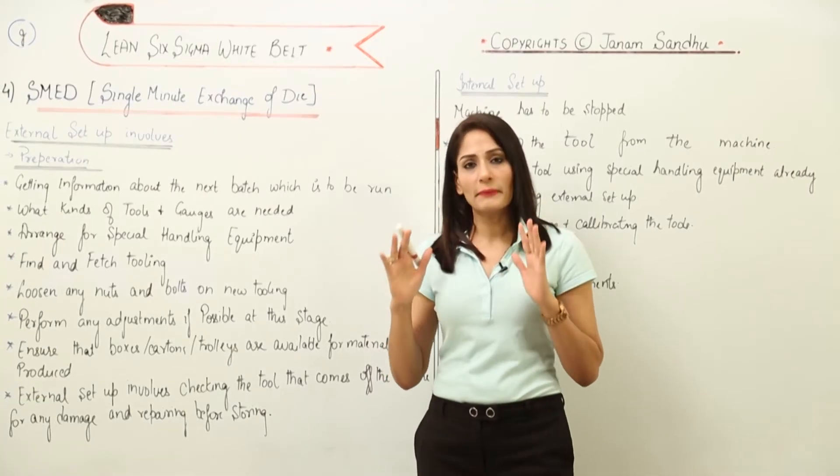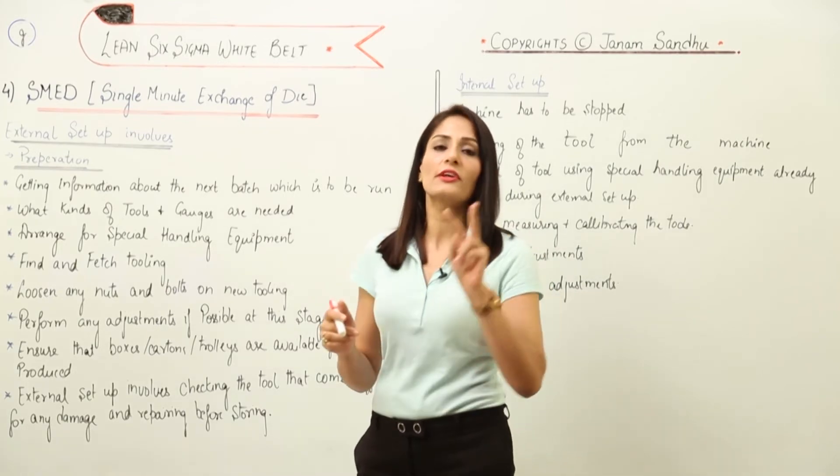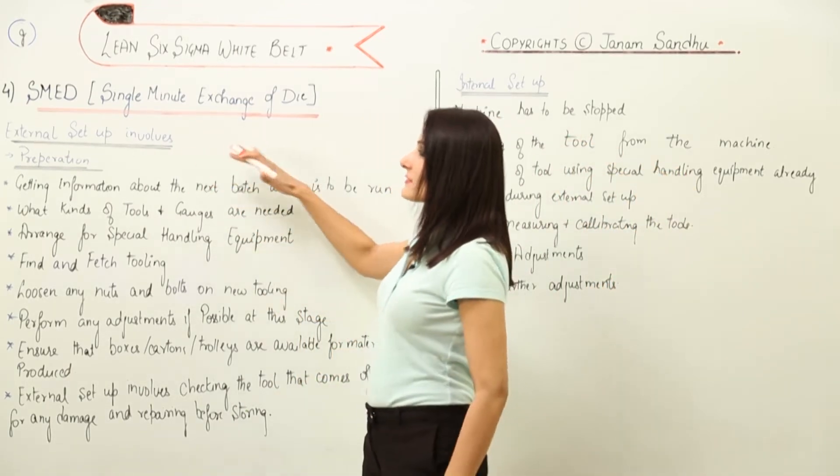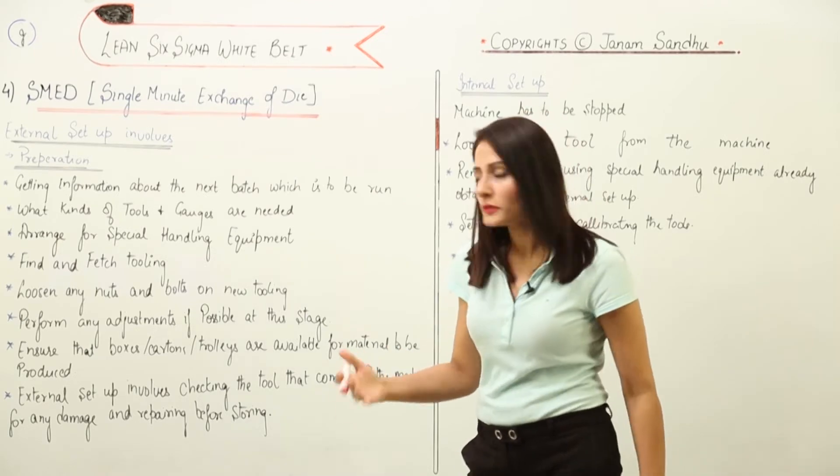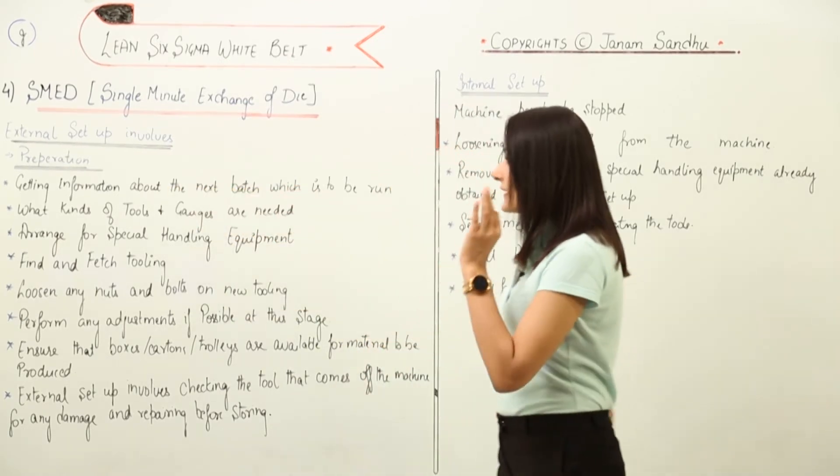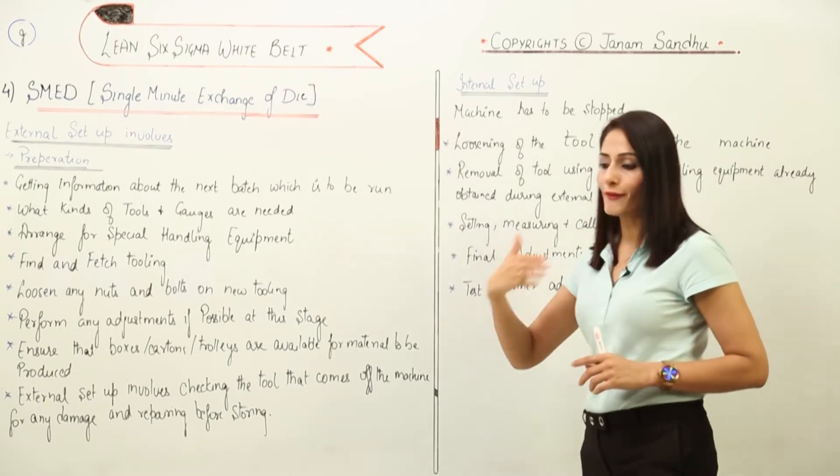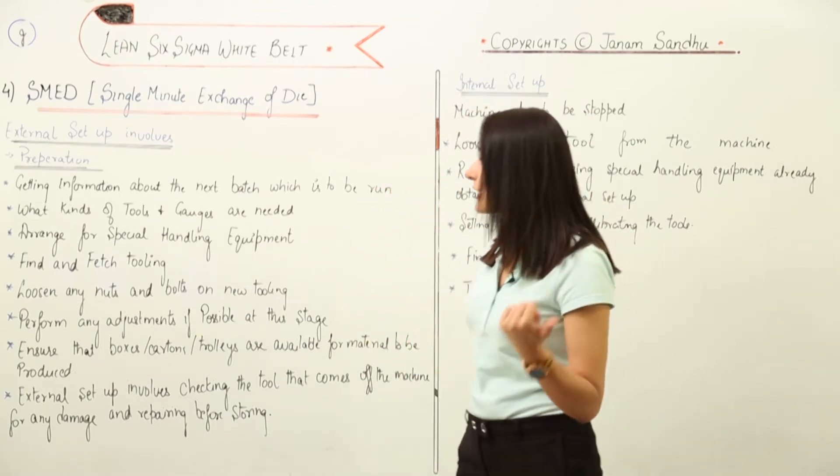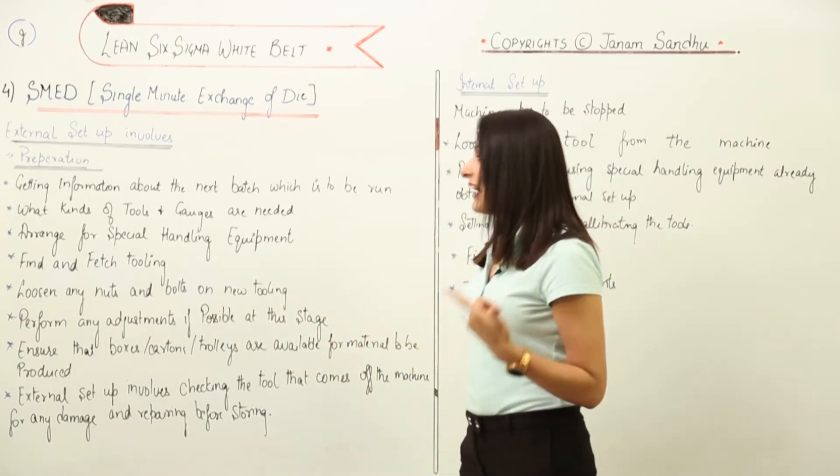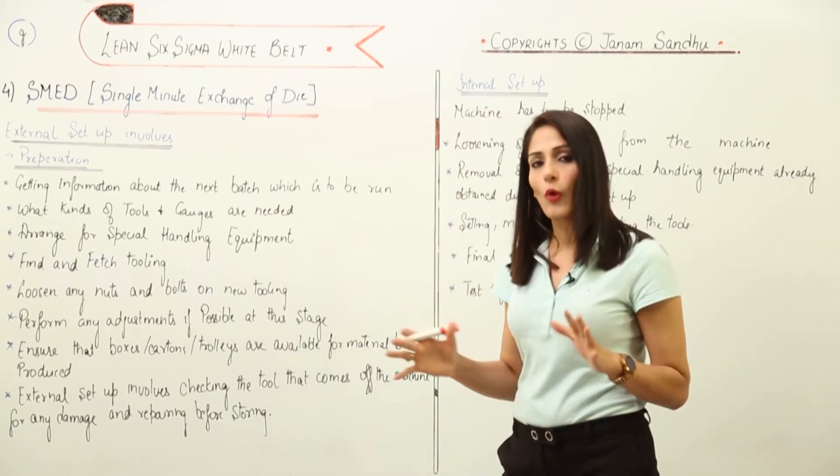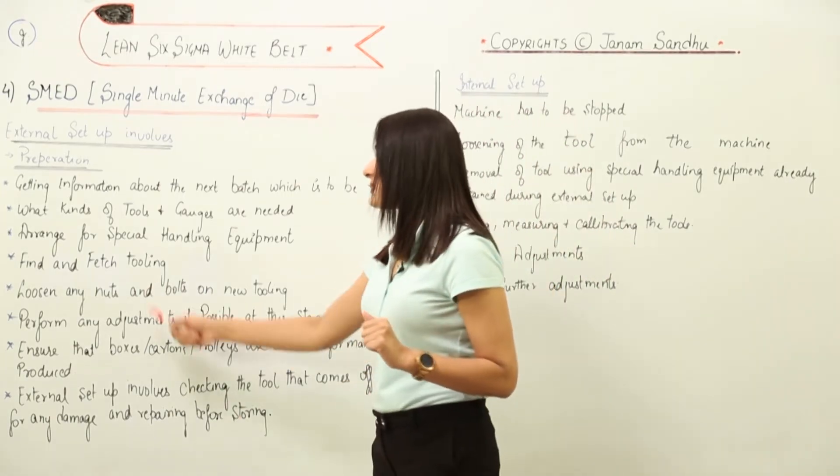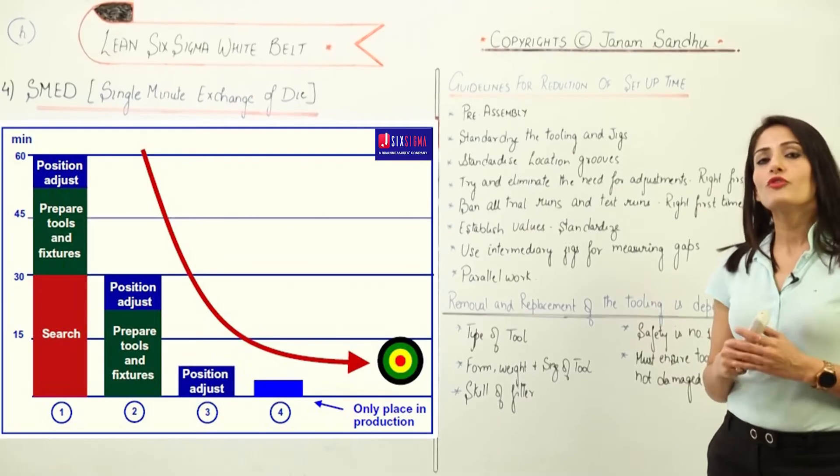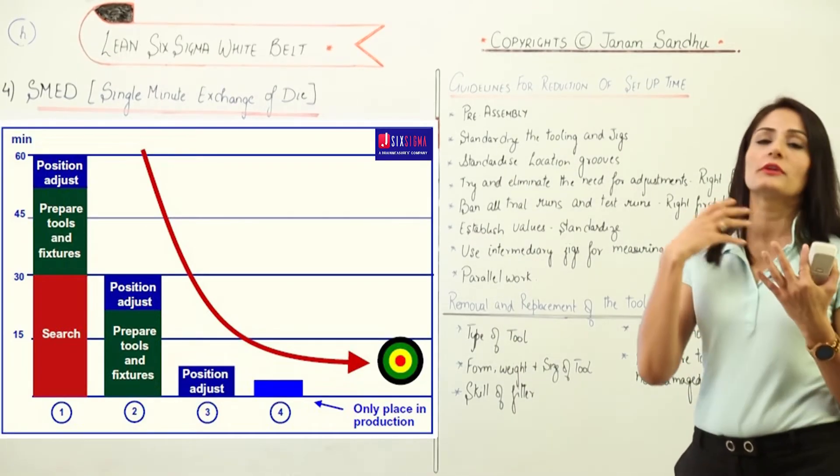In SMED, when we talk about setup times, there are two types primarily: external setup and internal setup. What does external setup involve? Basically, it's preparation - getting information about the next batch which is to be run, what you have to do after you changeover, what kind of tools and gauges are needed, arranging for special handling equipment, finding and fetching tooling, and whatever tools are required you should be ready with them, loosening any nuts.